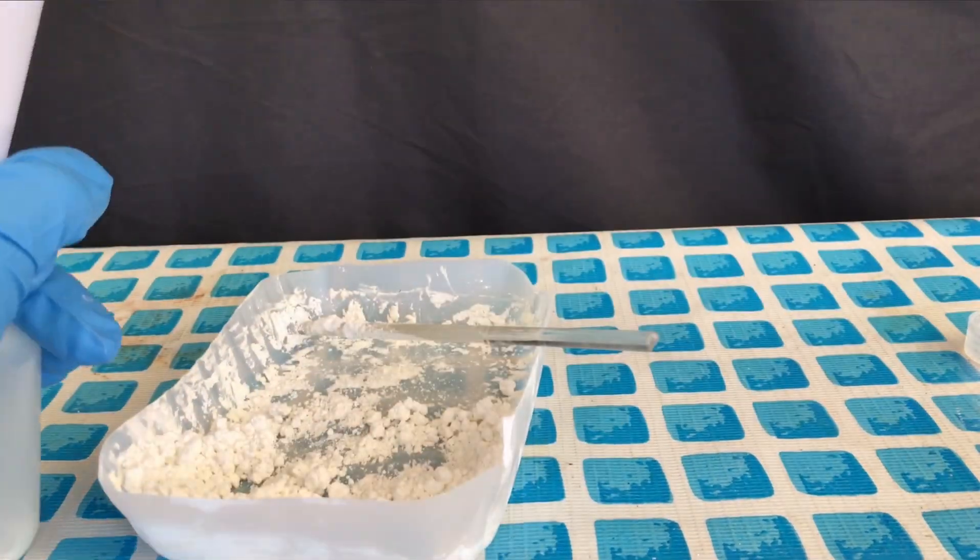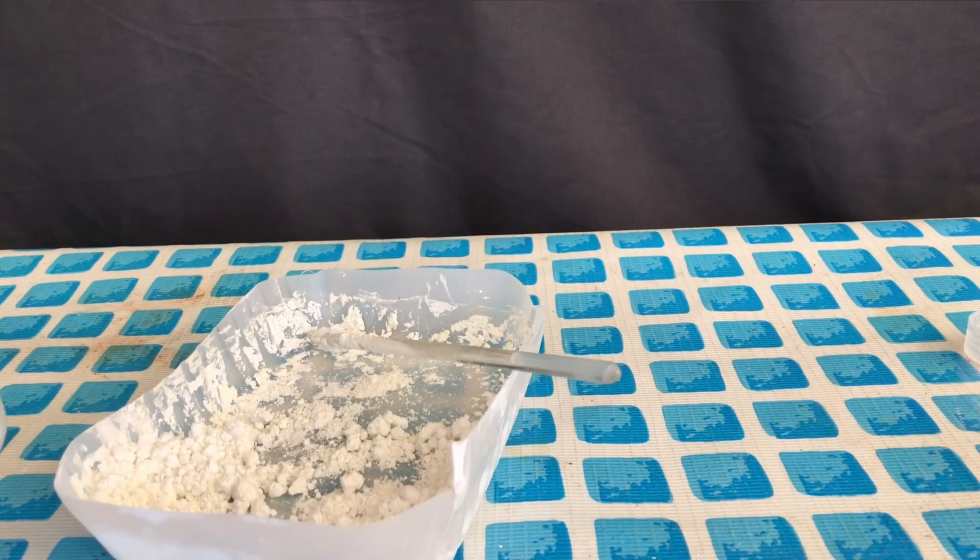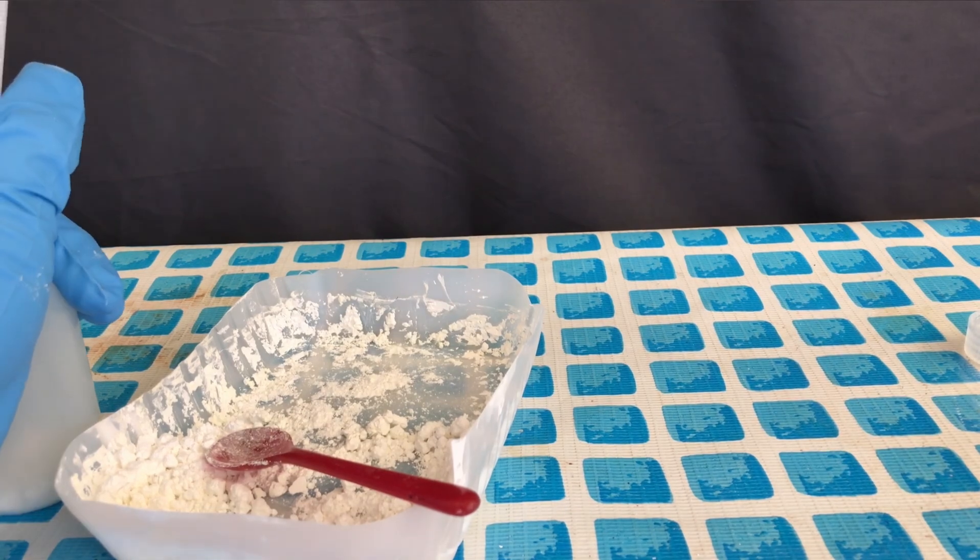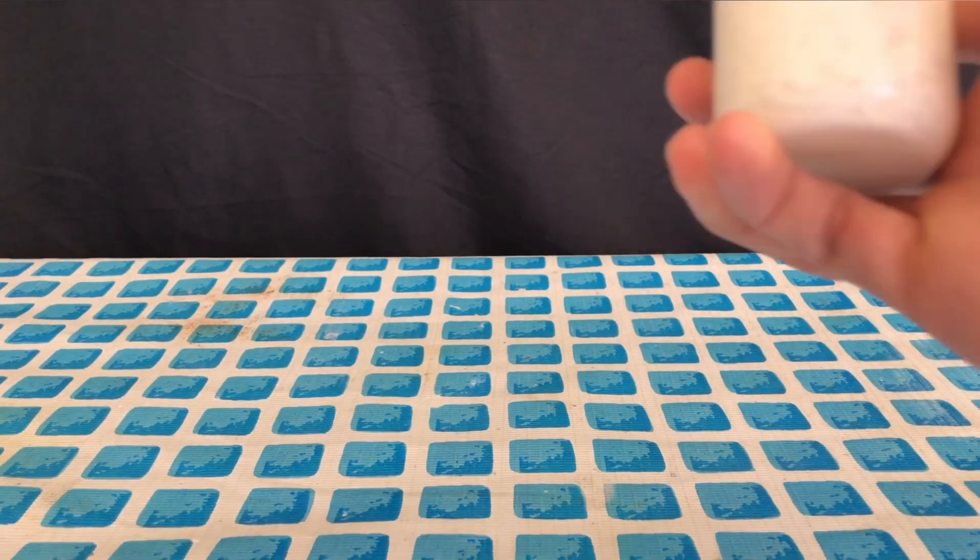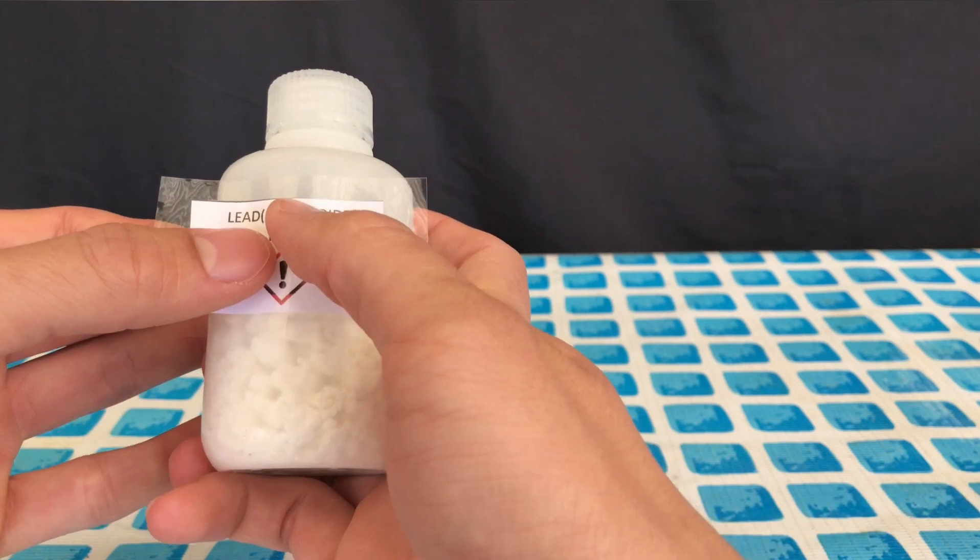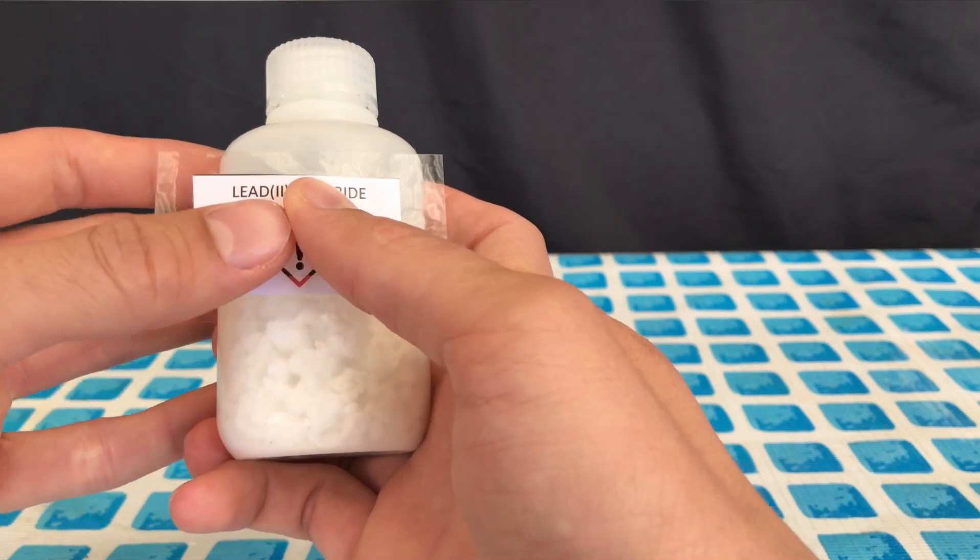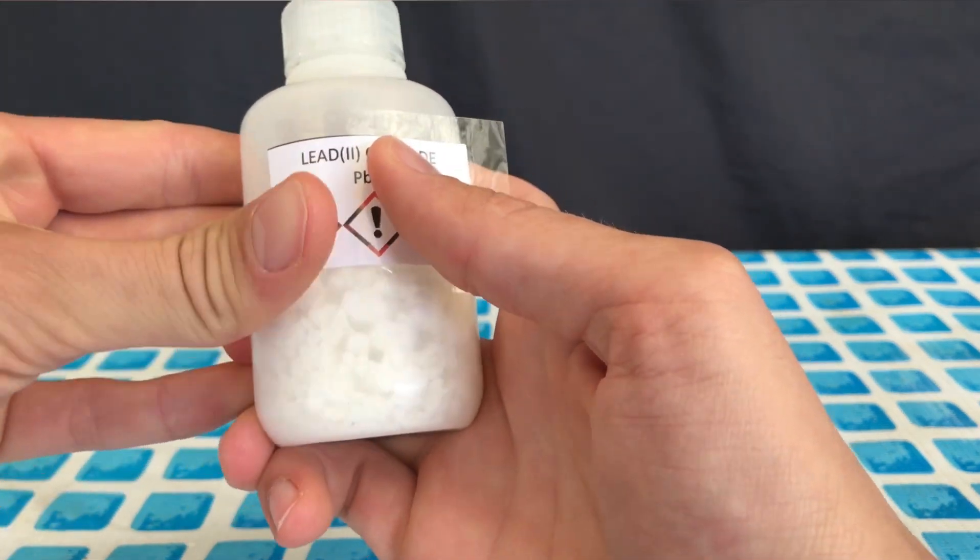The lead(II) chloride was broken up using a glass stirring rod and afterwards it was transferred to a pre-weighed bottle. The bottle was weighed again and we ended up with 114.6 grams of dry lead(II) chloride which is contaminated with a few flies.